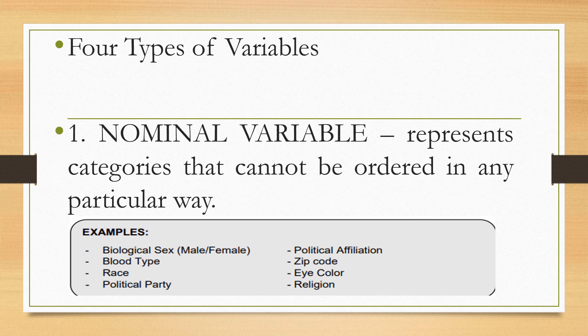For example, eye color — we don't rank blue eyes higher than brown or black eyes. There is no ordering among them. You can choose any category freely. That is why it is called a nominal variable.